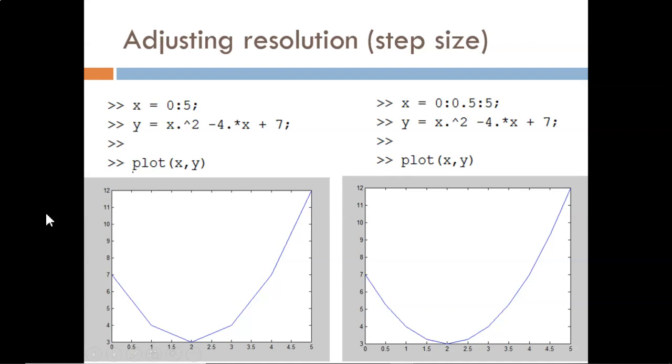On the left, we see the same plot as the previous slide with a step size of 1. On the right, I reduced the step size to 0.5. Notice how this made the curve smoother. However, no matter how much the resolution is increased or how smooth the curve looks, the plot function will still be plotting discretely.